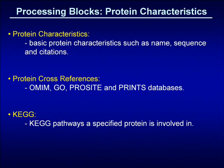To develop protein mashups, a number of protein characteristics processing blocks have been developed. These blocks take a protein ID as input and retrieve known information from protein databases. As an example, the UniProt database is accessed by the protein characteristics block. Other protein characteristics blocks include protein cross-references and KEGG.